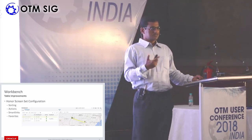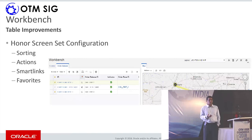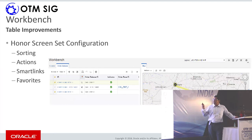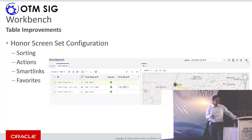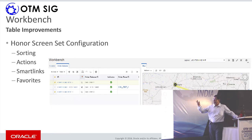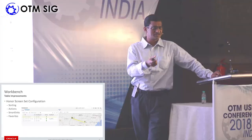Moving to workbench enhancements — a lot of yesterday's presentations used workbench heavily. It is a powerful UI and we have added workflow support. By default, screen sets — all the finders and their results as part of workbench panels — now support sorting, actions, smart links, and share bridge, which were available on normal finders. All of these are now also available in the workbench. You can sort within a workbench grid built on a finder, and do smart links directly from there.